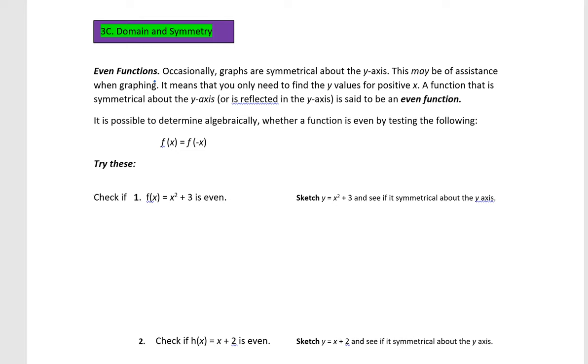So an even function is symmetrical, usually along a vertical axis of symmetry, and an odd function has point symmetry. Now point symmetry is if we were to take a central point, and it's usually the origin, and spin the graph 180 degrees around that one point, not reflect it, but spin it.